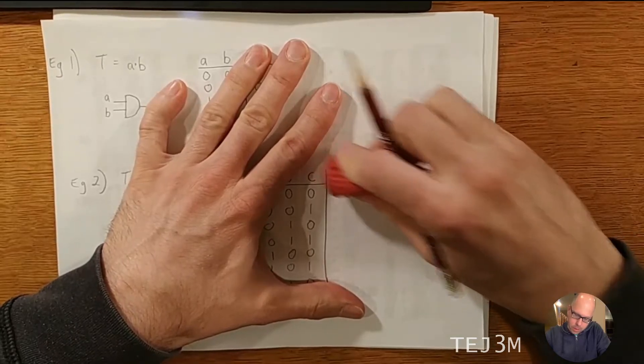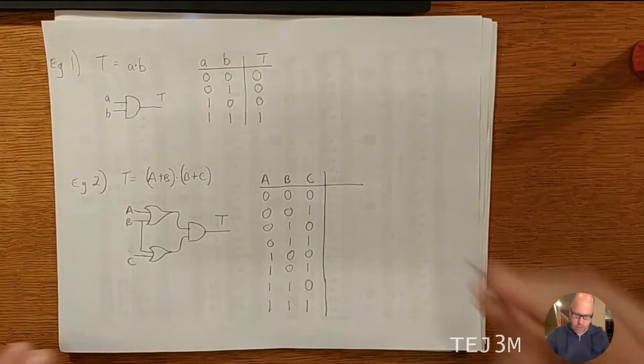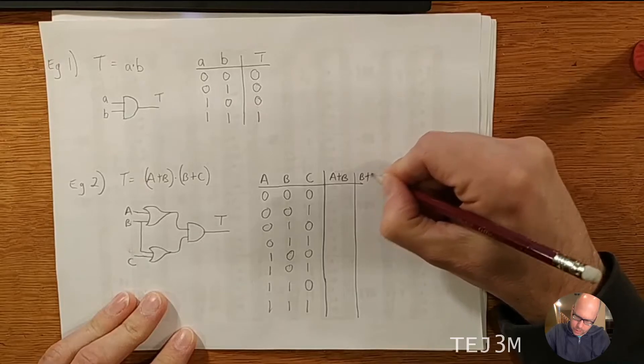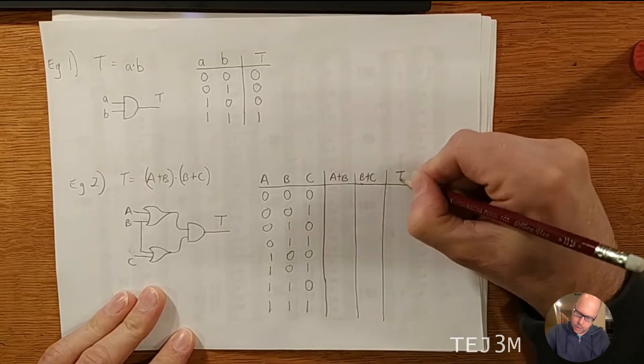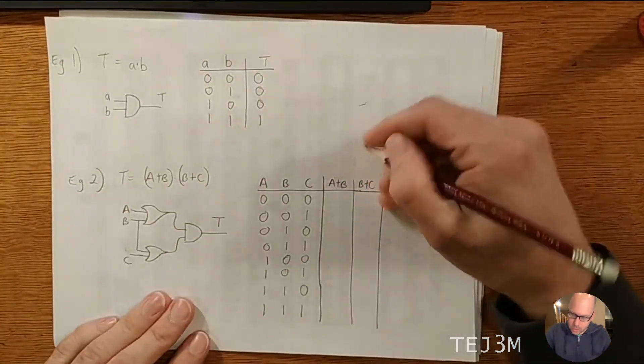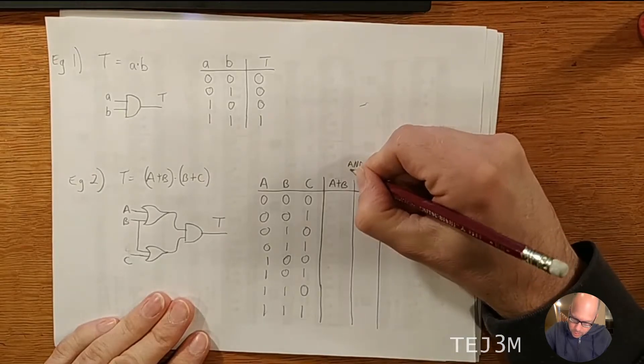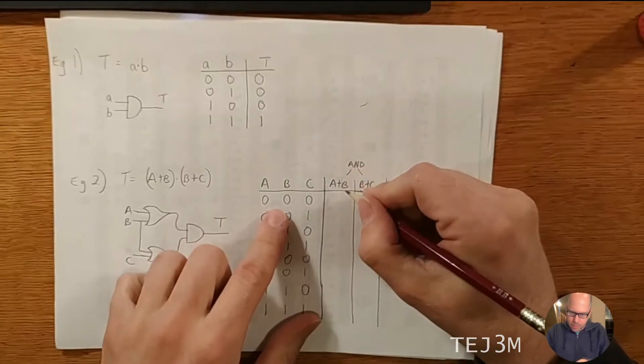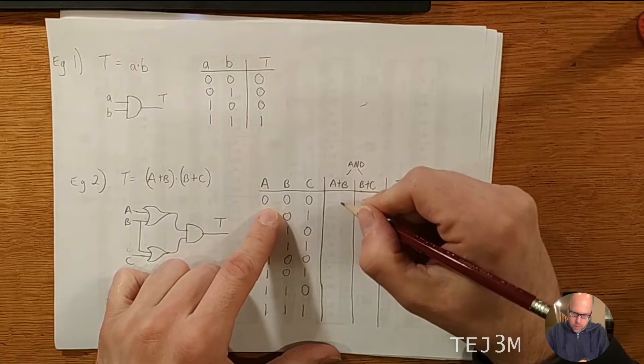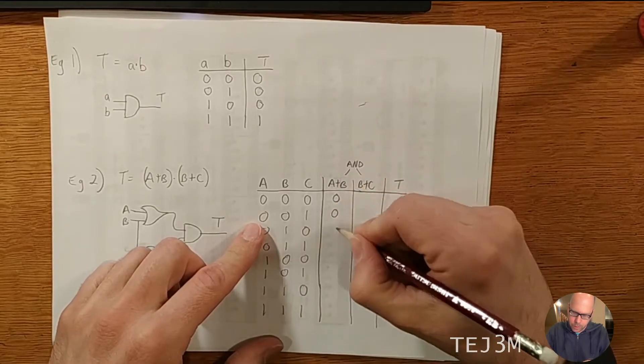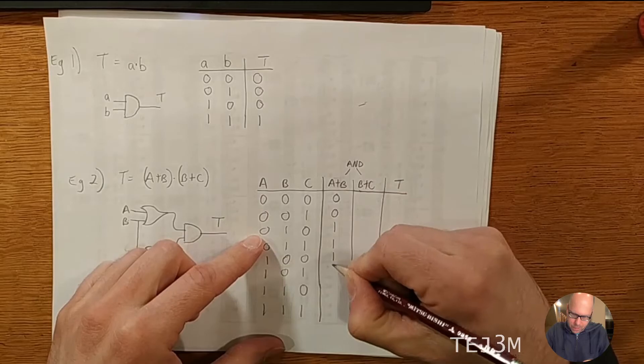Now, instead of T, I'm actually going to have a couple of intermediate values here. So we're going to have A OR B as an intermediate value, and then B OR C as an intermediate value. And finally, T will be the AND of these two, just like the way that the logic expression said. And so, A OR B, this is just the OR gate. So the only time we'll get a zero with an OR gate is that both inputs are zero. Otherwise, it's just like a plus sign or an addition operator. So here we go. We've got some ones here. In fact, the rest are all ones.